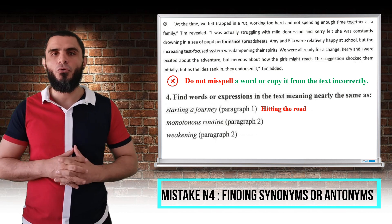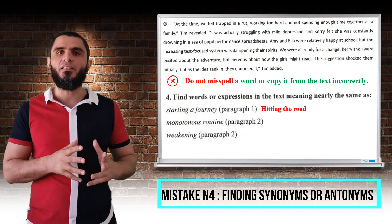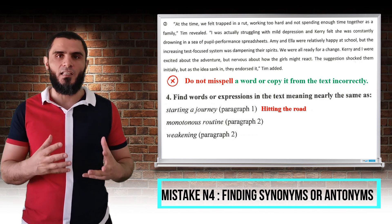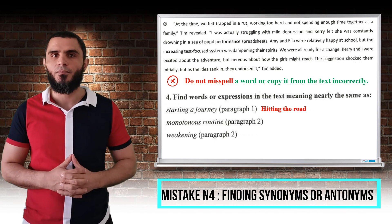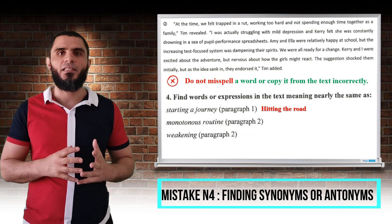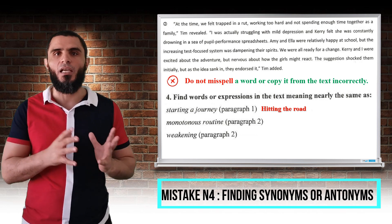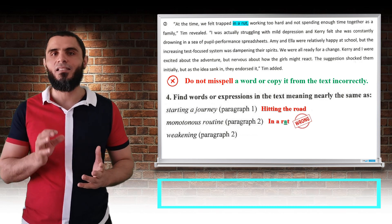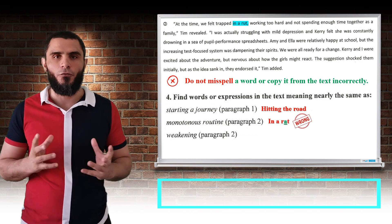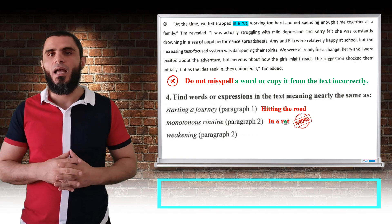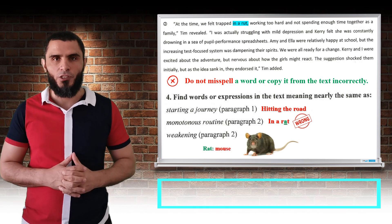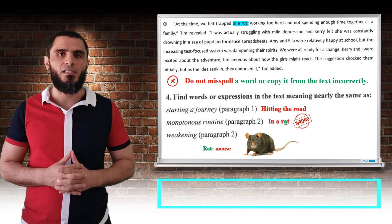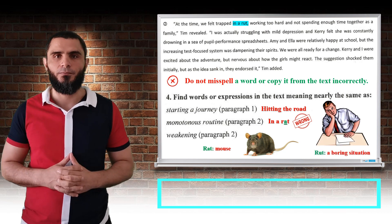Let me give you another example. In the text we have to find a synonym for 'monotonous routine,' and in the text we find the expression 'in a rut.' Some students write 'rat' instead of 'rut.' The first word is an animal meaning a mouse, whereas the second one means a boring situation.